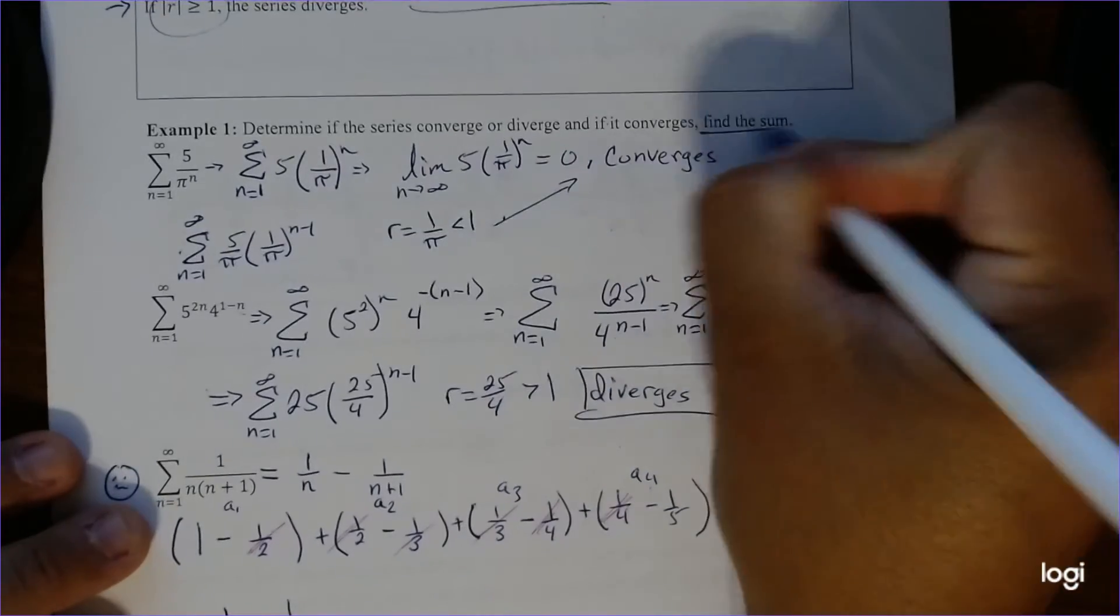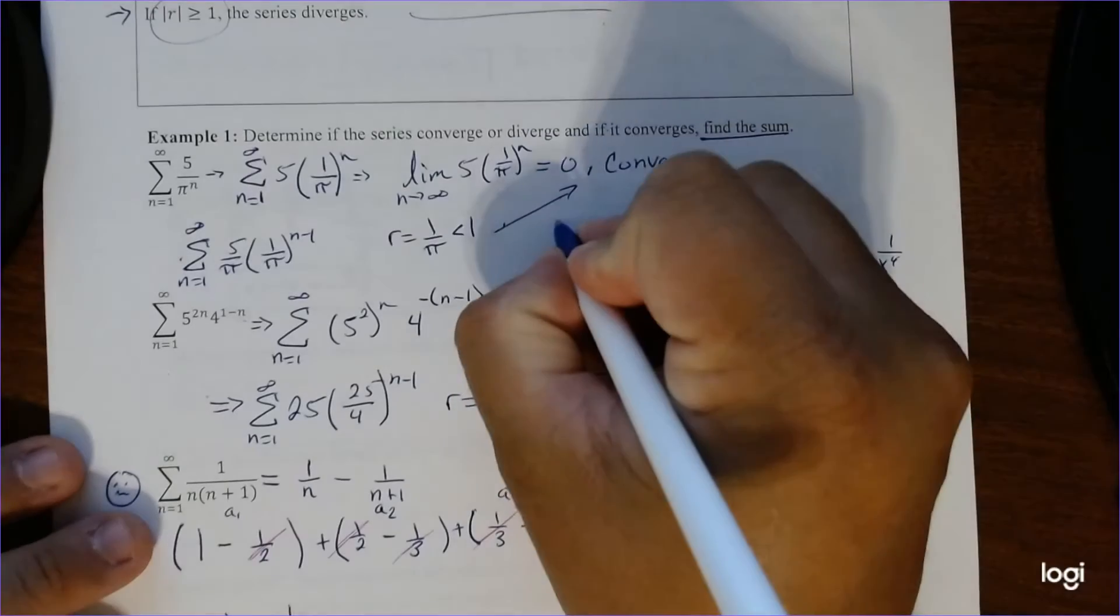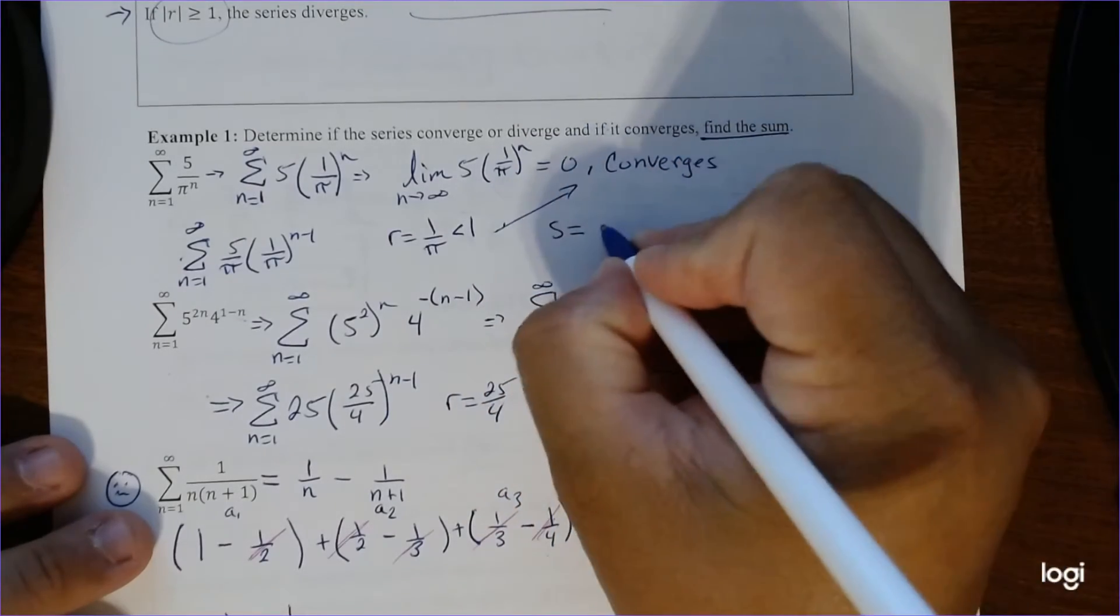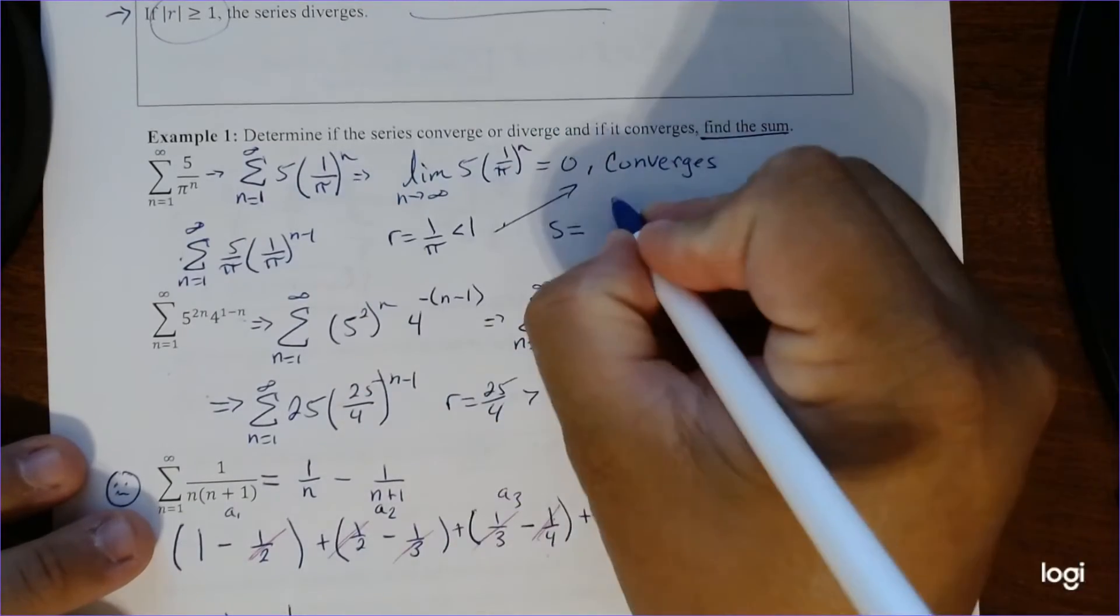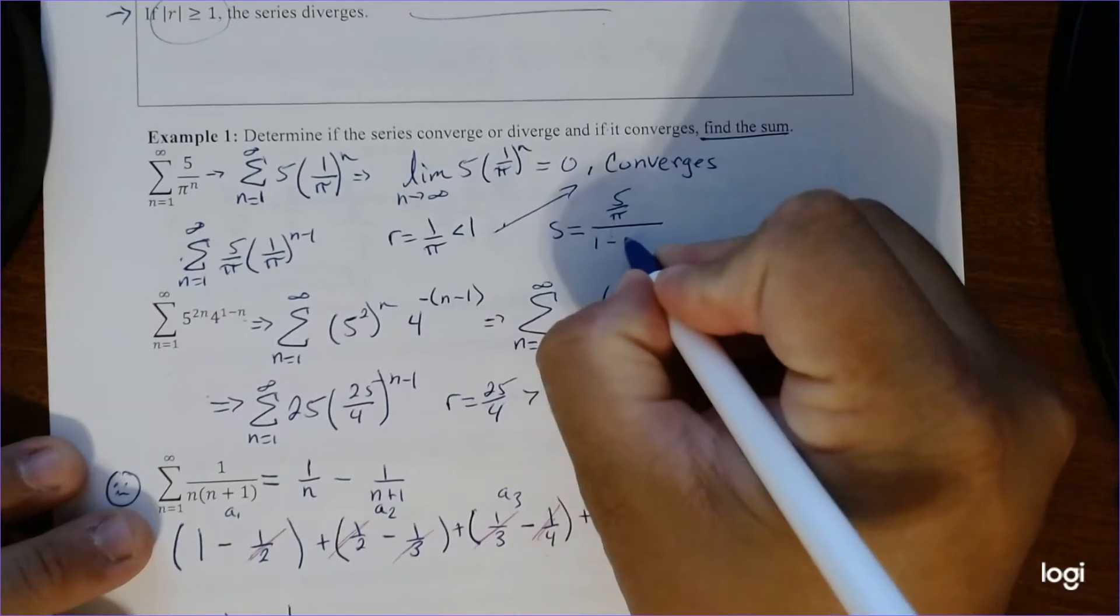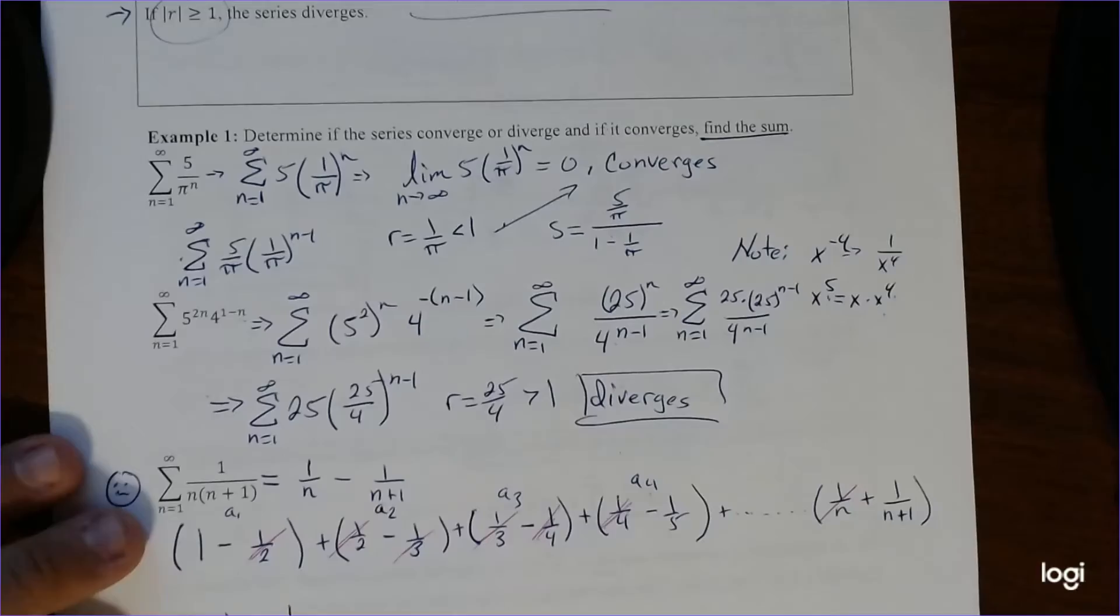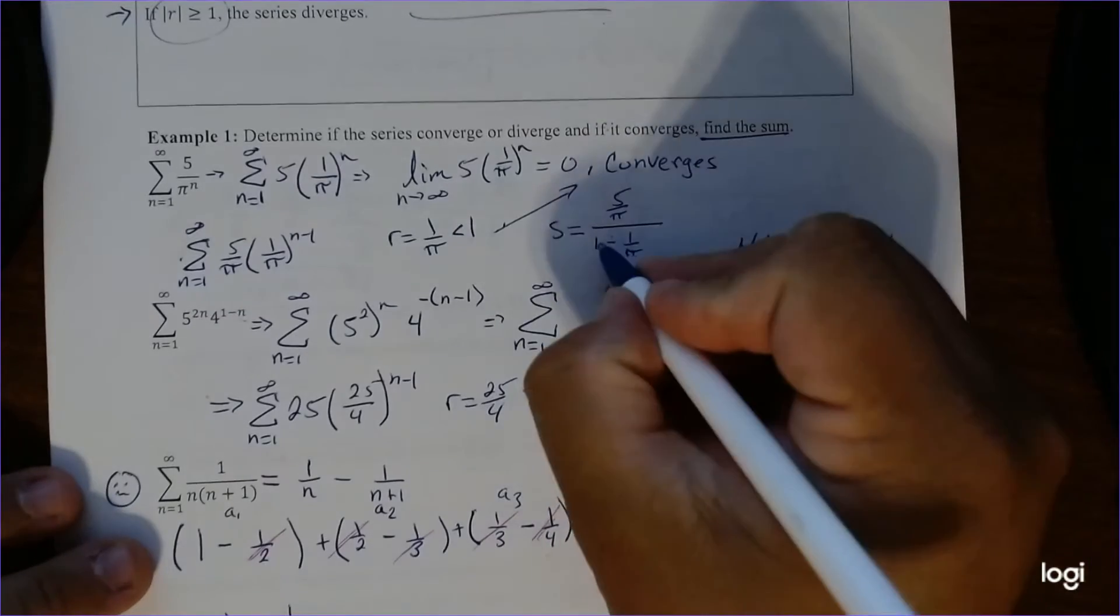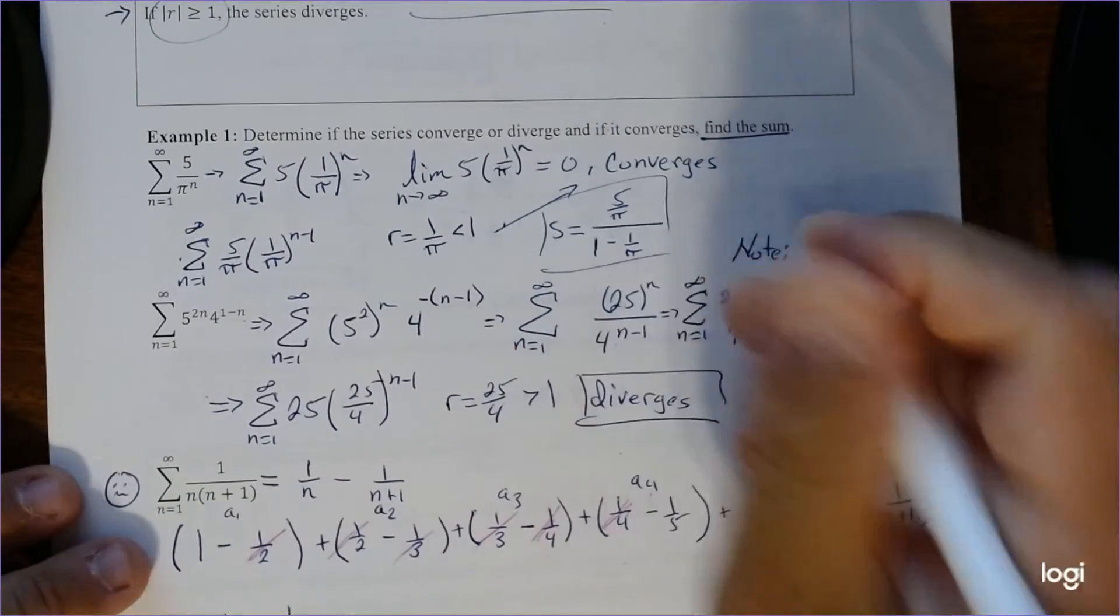And now since we want to find the sum, S is equal to A, which is 5 over pi over 1 minus 1 over pi. And there's our sum there once we just simplify.